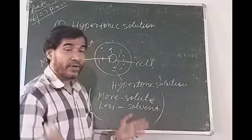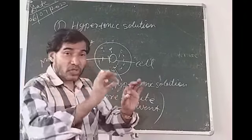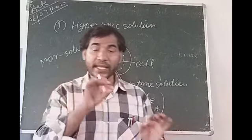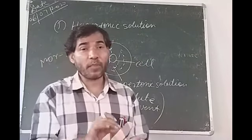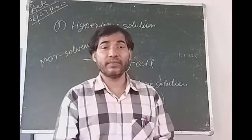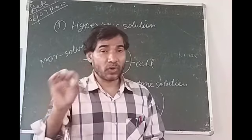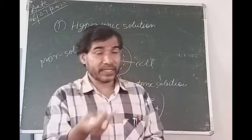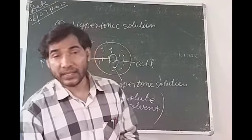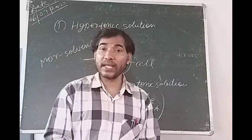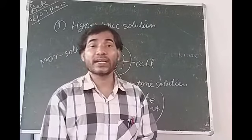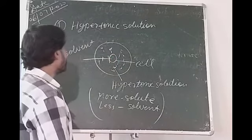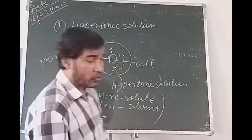Once again: if exosmosis takes place in a plant cell, shrinking will occur and such a shrunken plant cell will be called a plasmolyzed plant cell. Whereas if shrinking takes place in an animal cell, such a shrunken animal cell will be called a crenated animal cell.